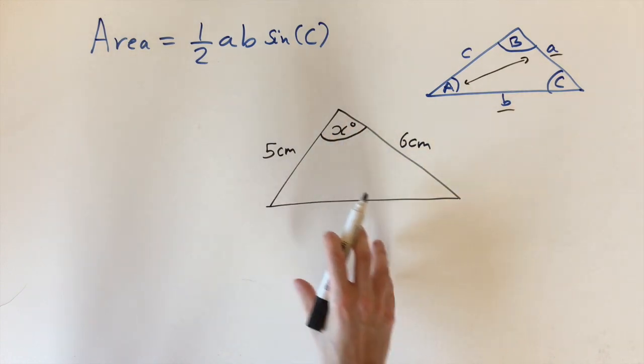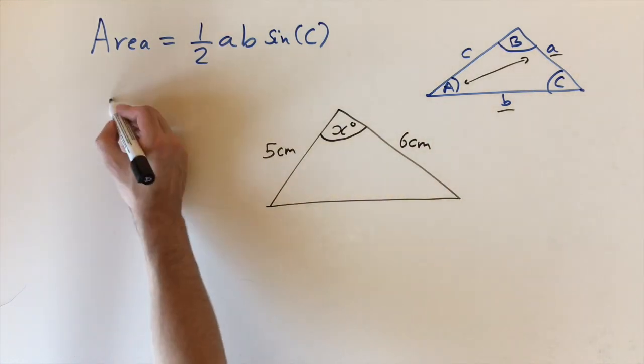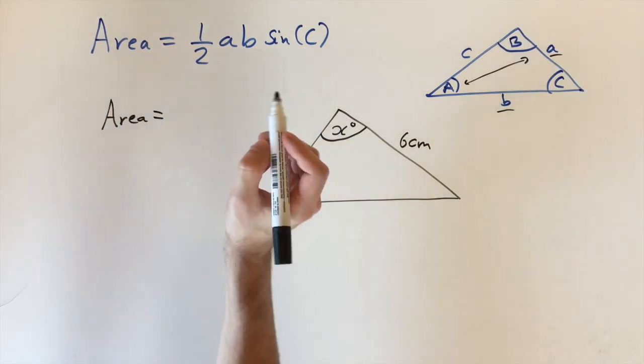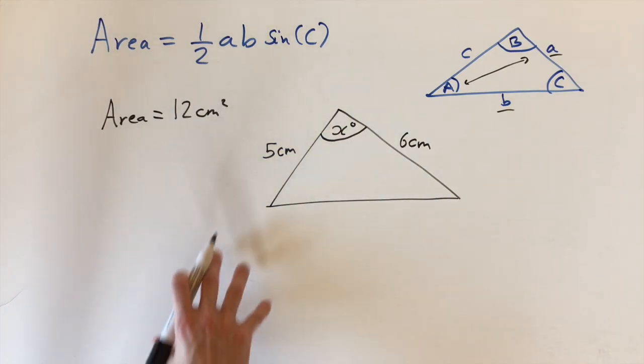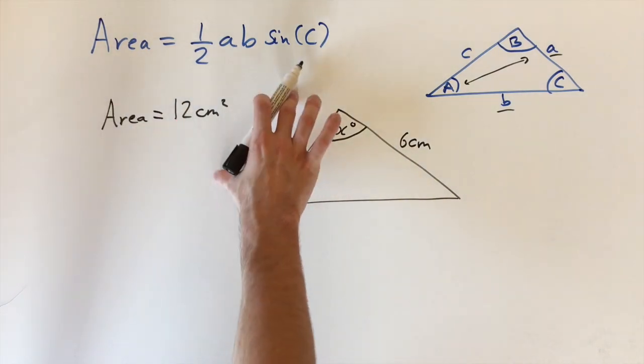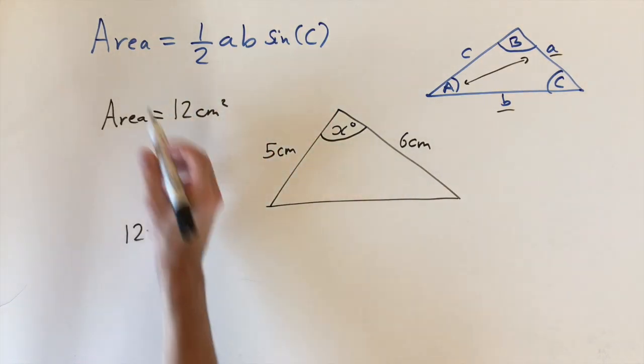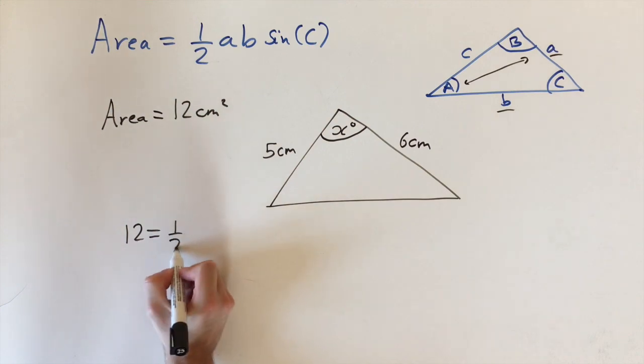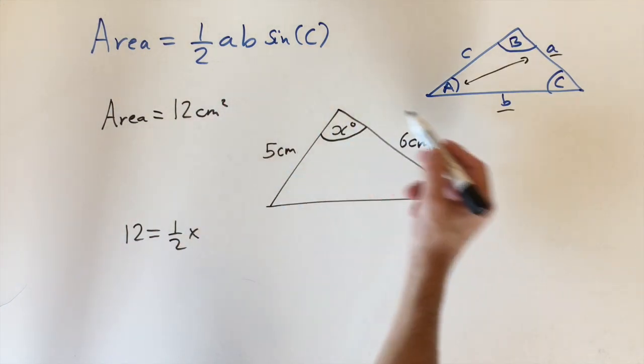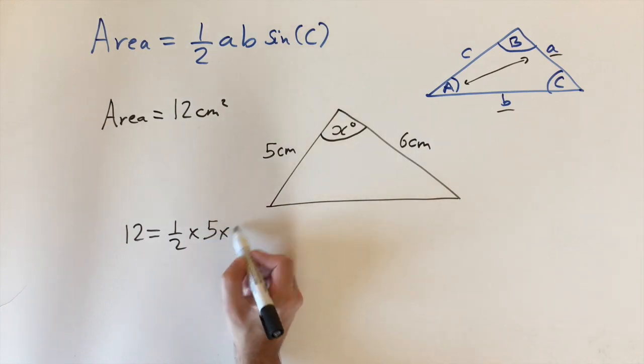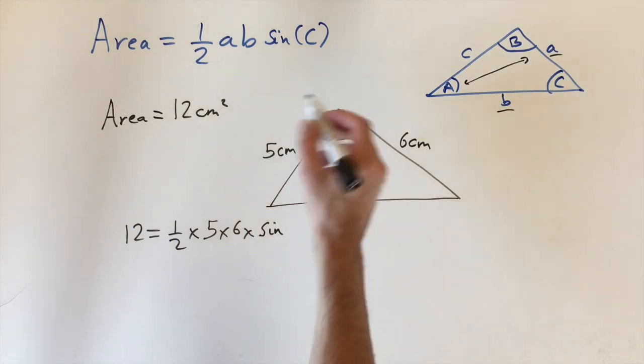The problem is to work out what x is, given that the area equals 12 centimeters squared. We've got all the information except one variable, so we can plug it in and rearrange. We have 12 equals 1/2 times 5 times 6 times sine of x. So we can rearrange for sine of x.